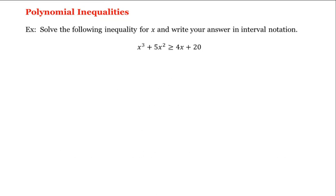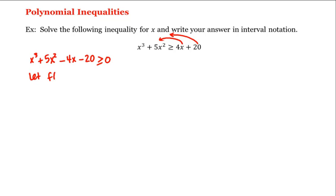Let's look at polynomial inequalities. For example, let's solve the following inequality for x and then write our answer in interval notation. The first thing we'll do is bring both the 4x and the 20 to the left-hand side of this inequality, which gives us x cubed plus 5x squared minus 4x minus 20 is greater than or equal to 0. Now let's let f of x equal this left-hand side.